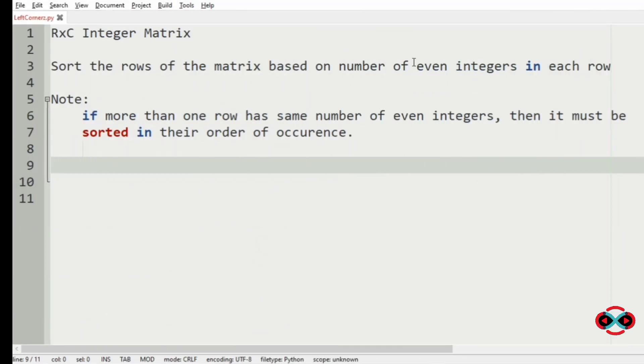We will understand our question. We have to accept the r cross c integer matrix from the user, then sort the rows of the matrix based on the number of even integers in each row. We have also given a note that if more than one row has same number of even integers, then it must be sorted in their order of occurrence.